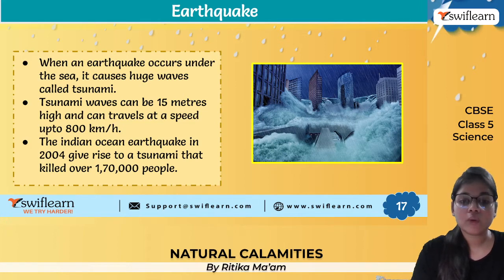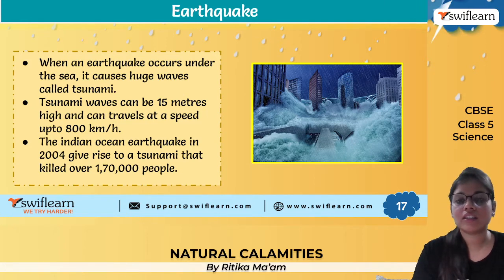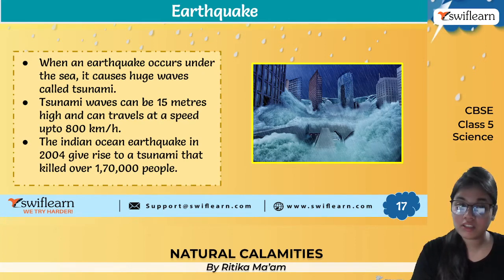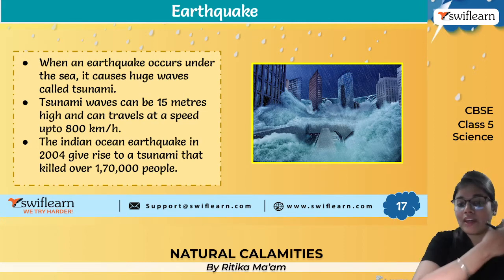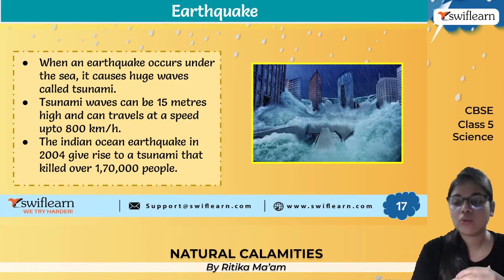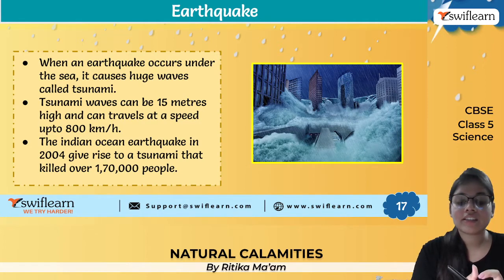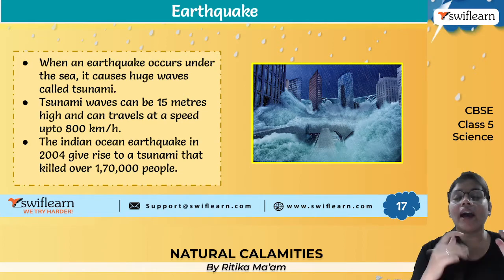When an earthquake occurs under the sea, it causes huge waves called a tsunami. When an earthquake occurs in the seabed — in oceans or seas — it disturbs the water level and a tsunami can occur. Tsunami waves can be up to 15 meters high and travel at speeds as high as 800 kilometers per hour. When they reach the shore, they can lead to great destruction.